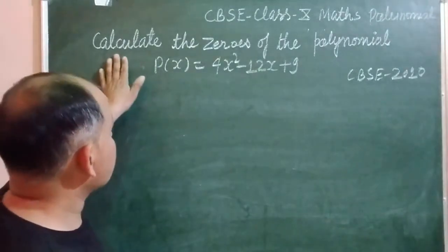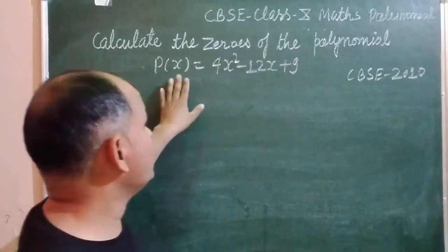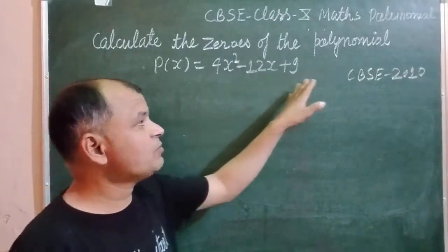So the question is, calculate the zeros of the polynomial P(x) = 4x² - 12x + 9.